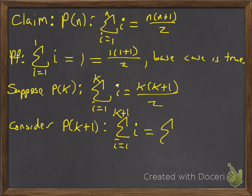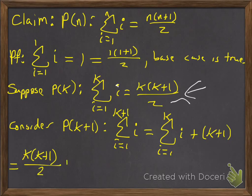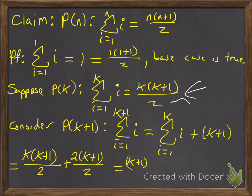Using a property of summation, we can say this is the sum from i equals 1 to k — the first k terms — and then the last one is just adding k+1. Now that sum we can rewrite as k(k+1) over 2 by our induction hypothesis. Then getting a common denominator, we'd have k(k+1) over 2 plus 2(k+1) over 2. Now they have a common denominator and also have a k+1 in common, so we factor out k+1, giving us k+2. So we get k+1 times (k+2) all over 2, and that proves what we wanted to show.